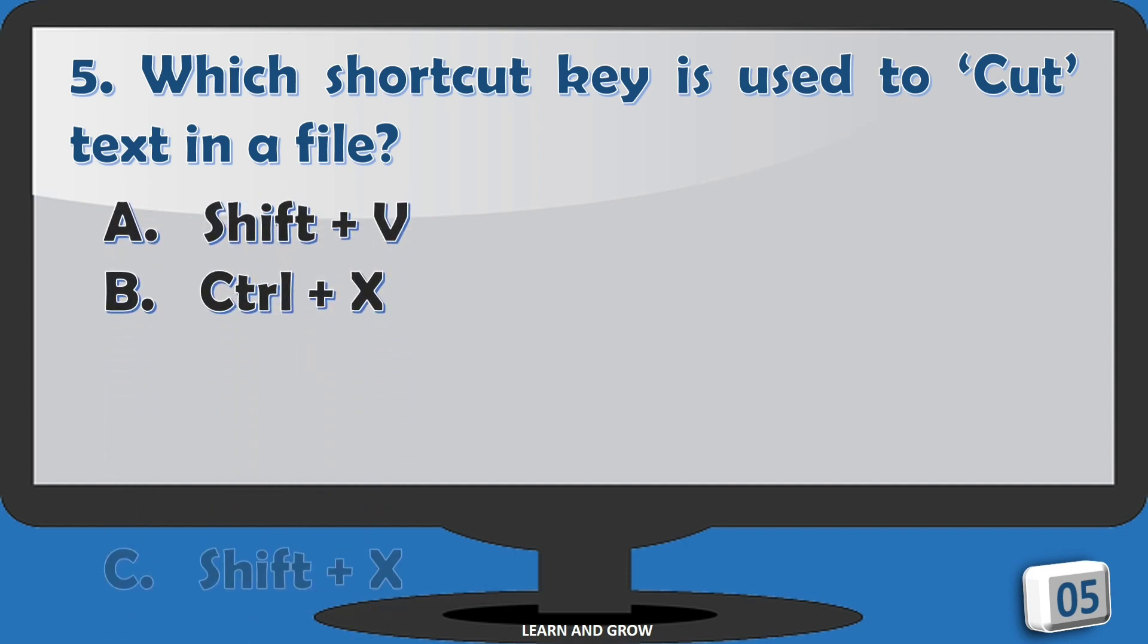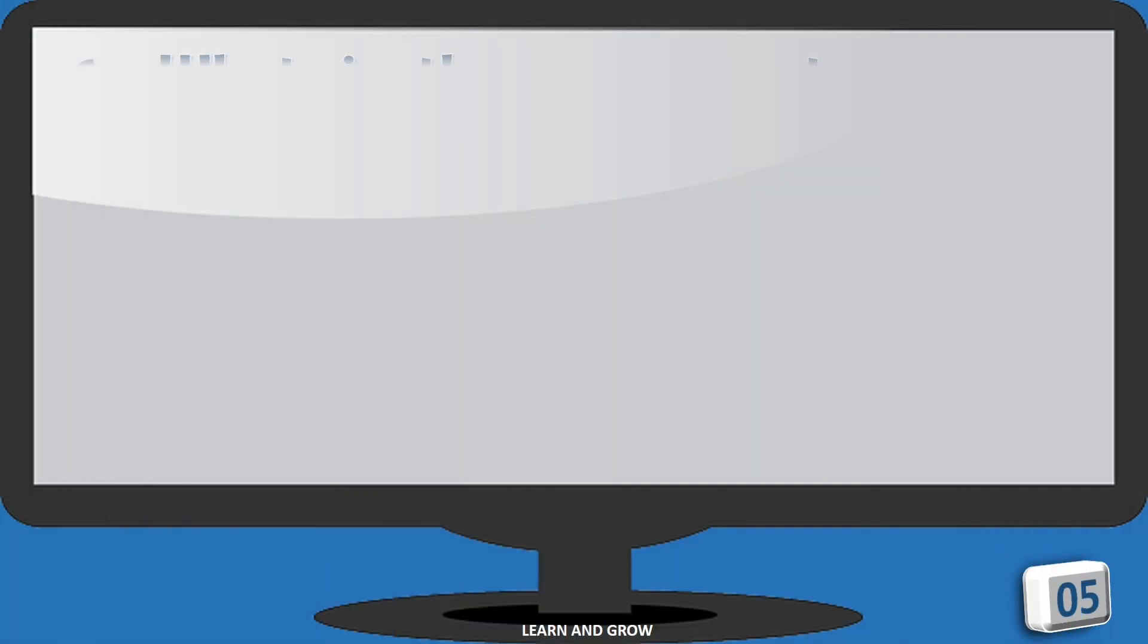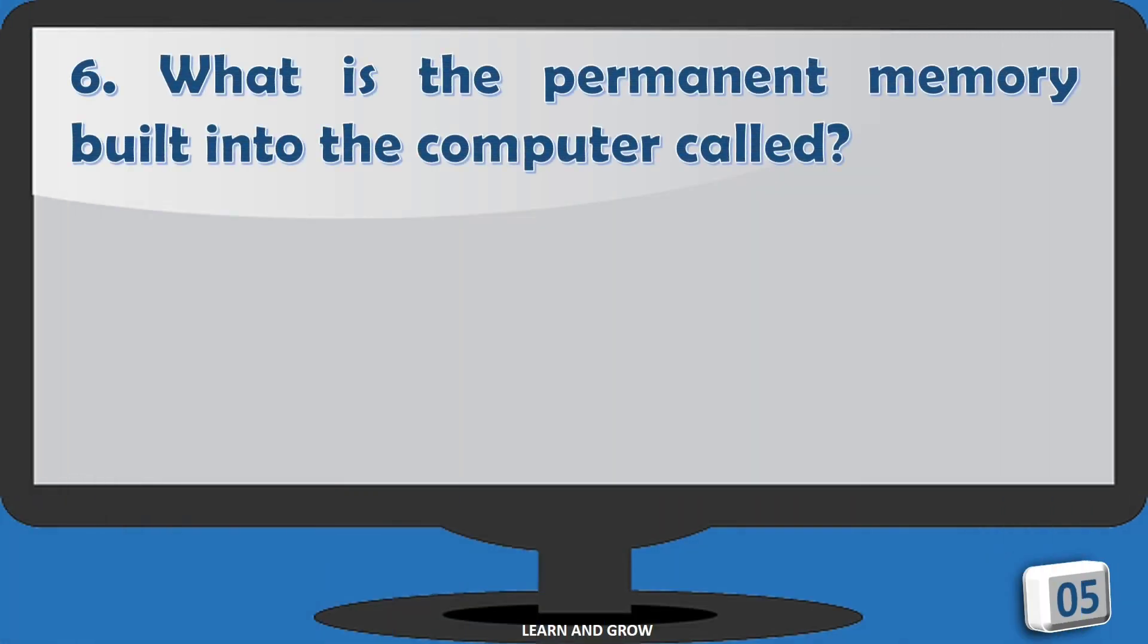Options are: A. Shift + V, B. Ctrl + X, C. Shift + X, D. Alt + V. The right answer is Control + X. What is the permanent memory built into the computer called?